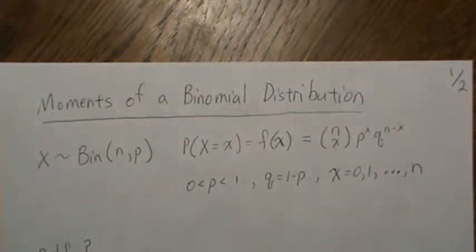In this video, we're going to derive the moments of a binomial distribution, specifically the mean and the variance, but we're also going to show that it is a PDF that it sums to one.